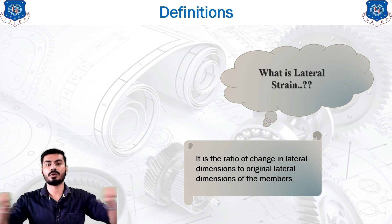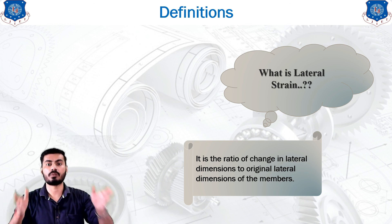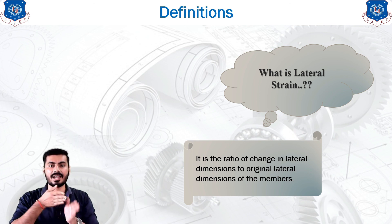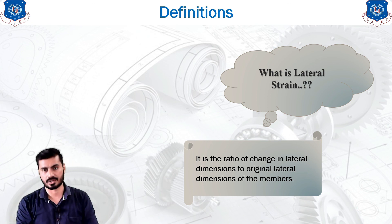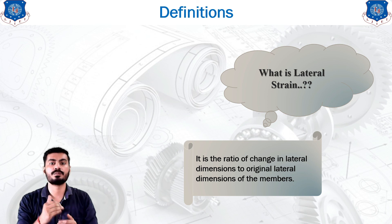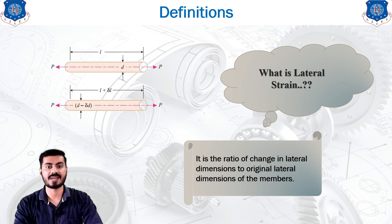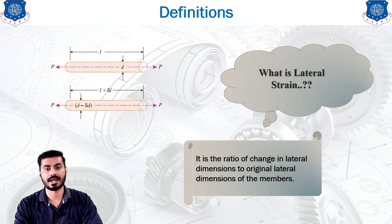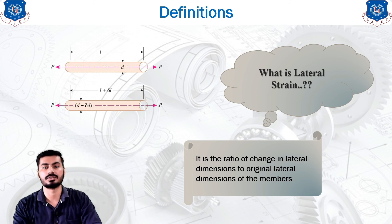When you apply a pull force on a body in the longitudinal direction, the length in that direction increases but, since volume is constant, the lateral dimensions — height and width — are contracted. That is why lateral strain is negative compared to linear strain. In a circular bar example, when force P is applied, the length increases to l + δl but the diameter is reduced.